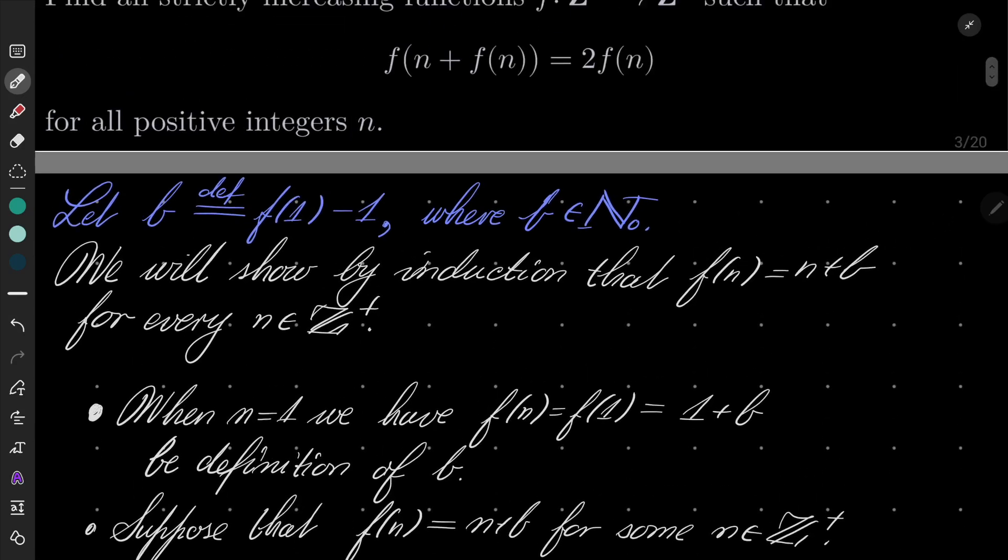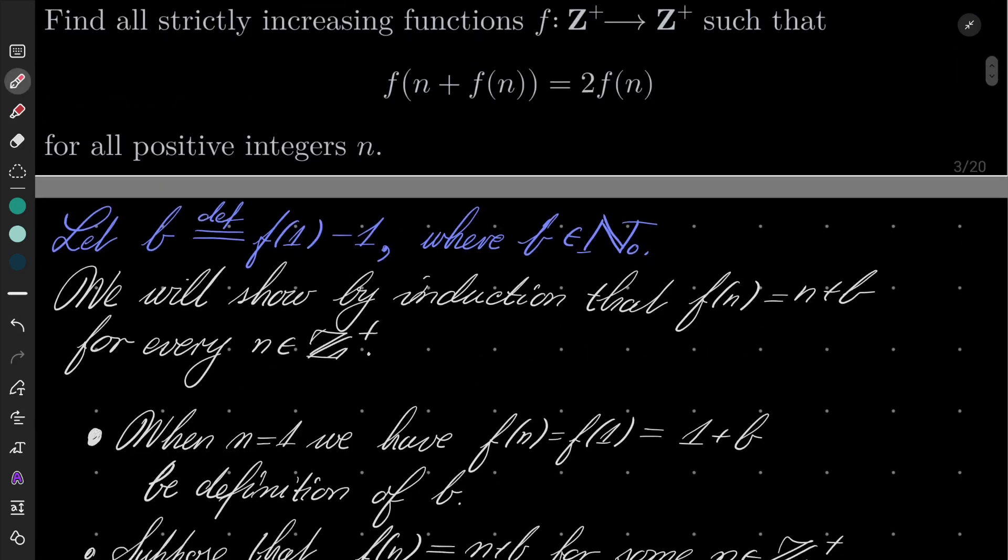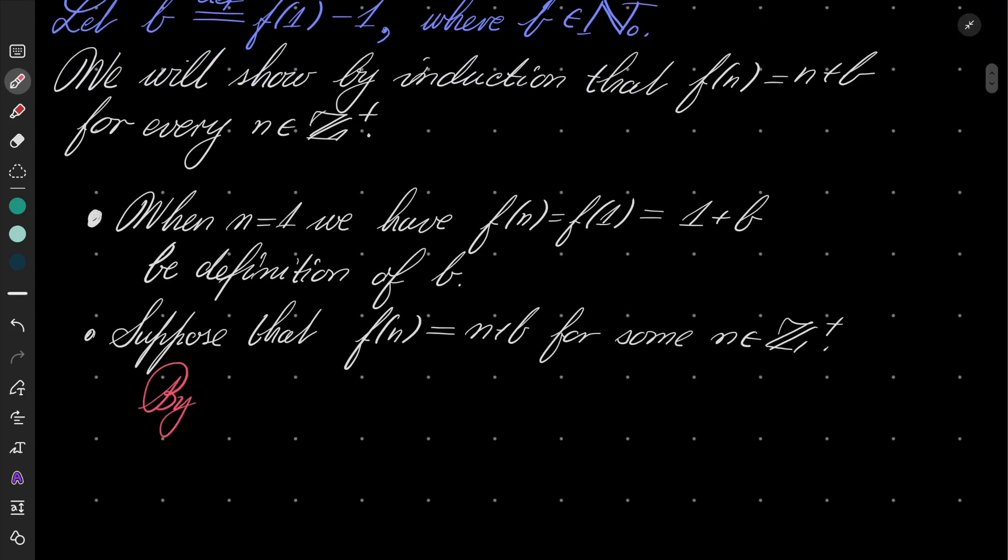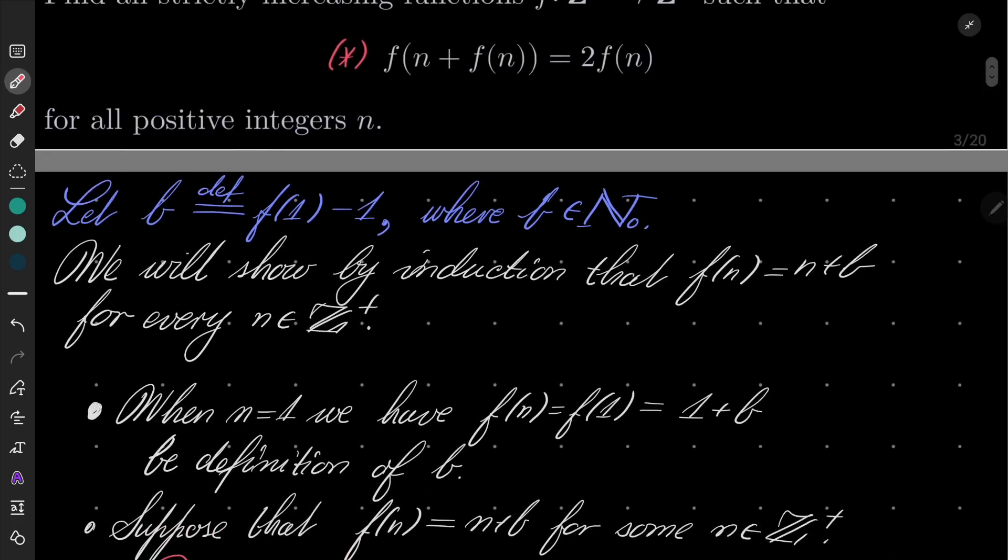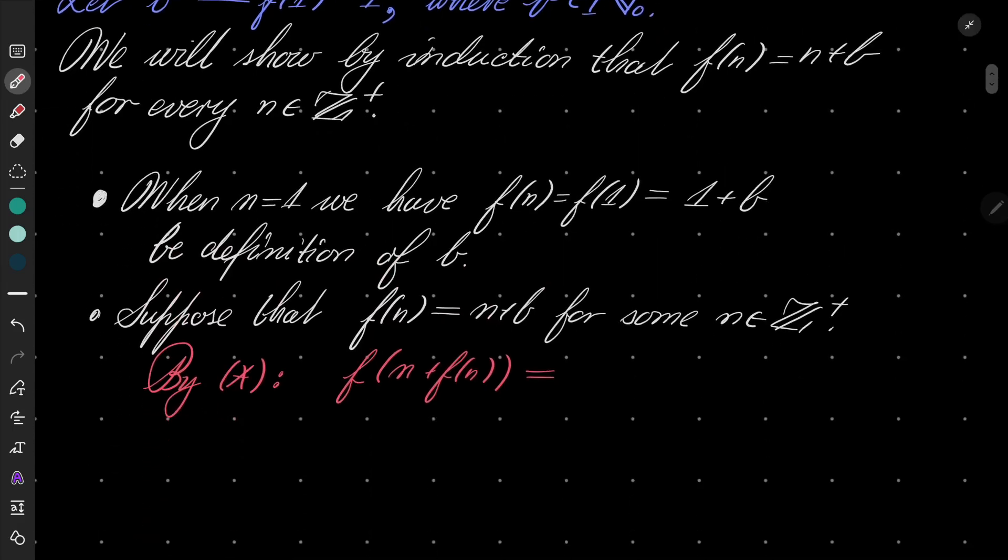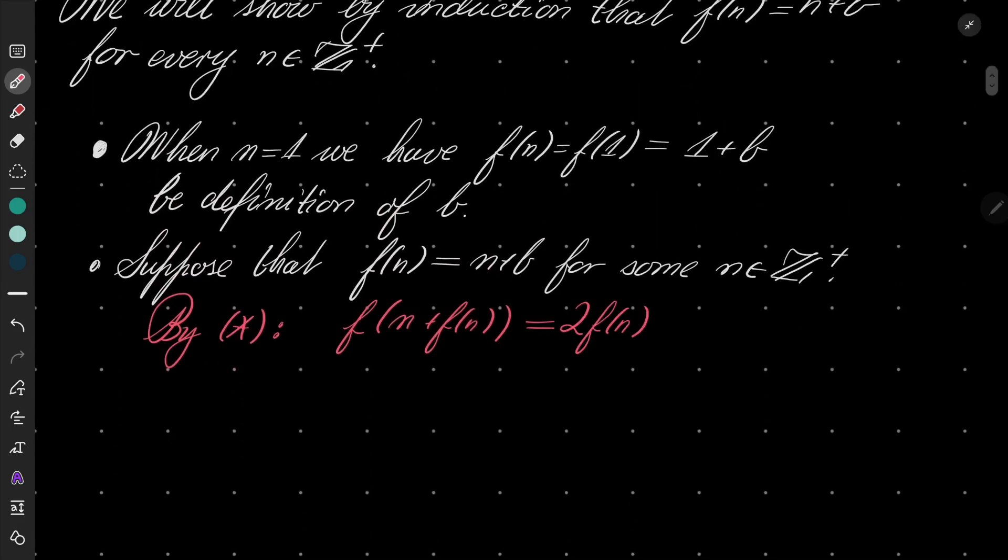Well, by our functional equation, which I will mark asterisk, by putting in our n, we will get: f(n + f(n)) = 2f(n). In other words, since f(n) = n + b, we have f(2n + b) = 2n + 2b. Very well.